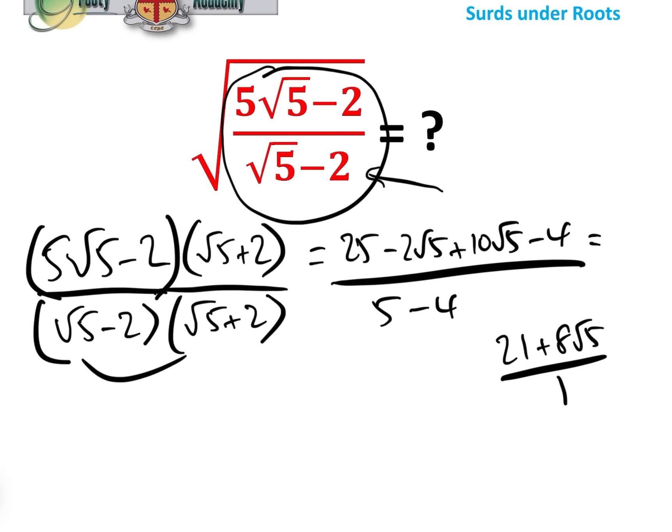Okay, so that's great, it's a good start. So in actual fact we know that 5√5 minus 2 over √5 minus 2 can be simplified to 21 add 8√5. So we are now left with the square root of 21 add 8√5.